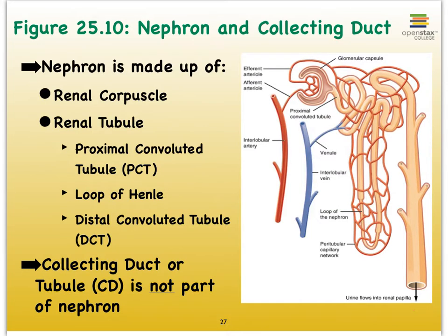We refer to the nephron of the kidney as the functional unit of the kidney because it's at that microscopic level that urine is created. There are about a million or so nephrons per kidney. They play a very important role in not just producing our urine, but as they make urine, they're also going to influence all kinds of aspects about our blood.